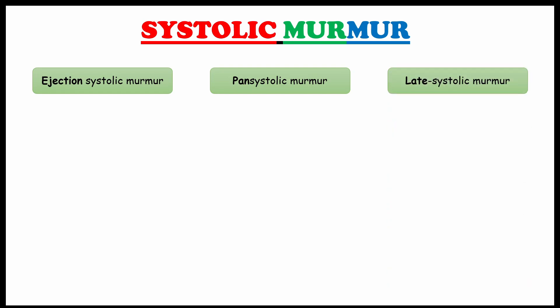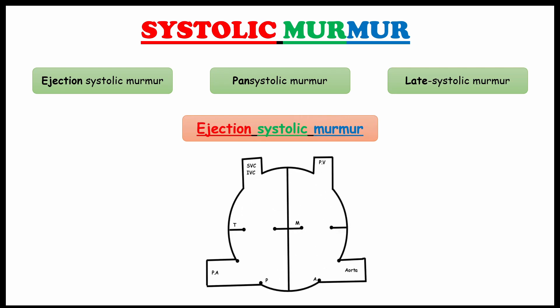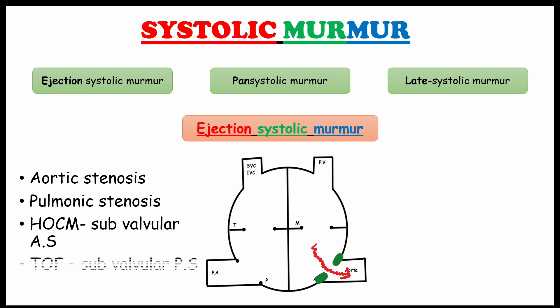Okay first ejection systolic murmur. In the name itself you can understand that murmur happening due to the problem with ejection which means blood in the ventricle can't pass easily due to the narrowing of the orifice. From this we are getting to know in which case we will see the ejection systolic murmur. Those are aortic stenosis, pulmonic stenosis, hypertrophic obstructive cardiomyopathy which we will see the subvalvular aortic stenosis and tetralogy of Fallot which we will see subvalvular pulmonary stenosis.